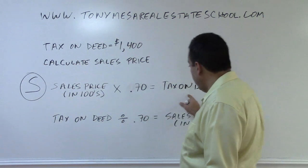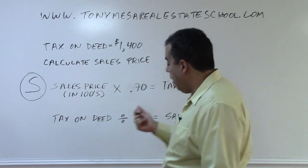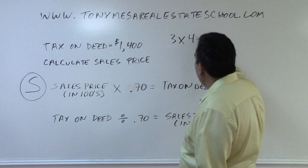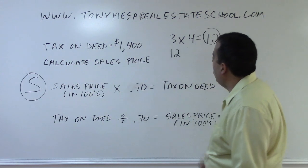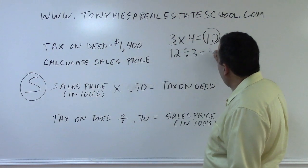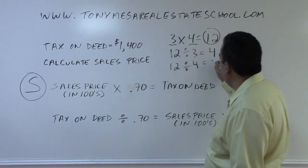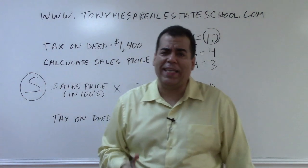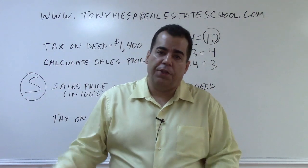The mathematical concept you need for the state exam — not just for this problem but for others — is that one number multiplied by another gives you an answer. You can always take the answer and divide it by one of the two numbers being multiplied to get the other one. For example, 3 × 4 = 12; take 12 ÷ 3 = 4, or 12 ÷ 4 = 3. So one number times another gives an answer, and you can always divide the answer by either factor to get the other.